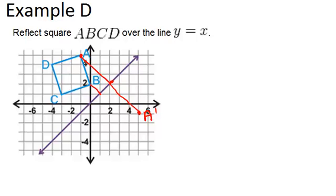For B, it's only one diagonal unit away, so that gives me B'. C is one, two diagonal units away, so C' will be over here.